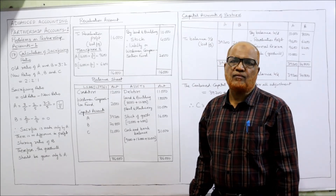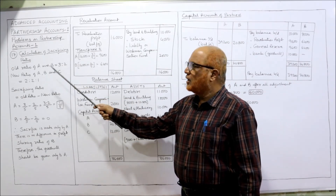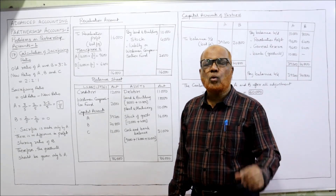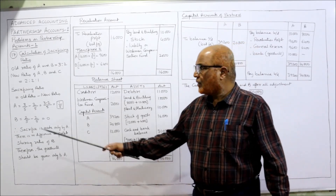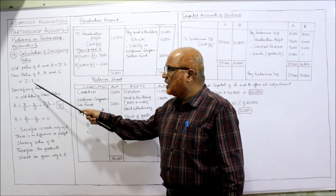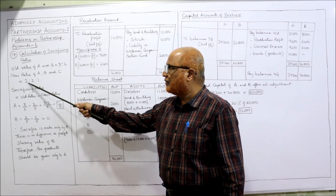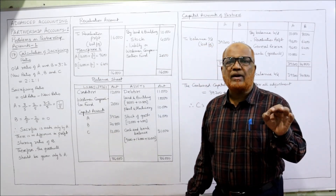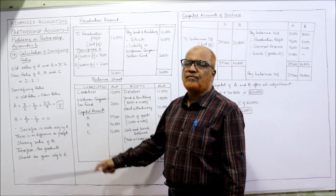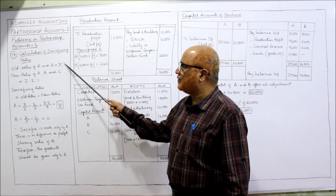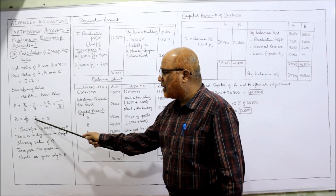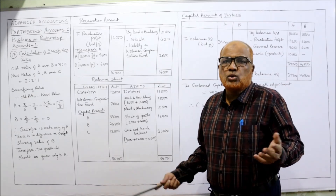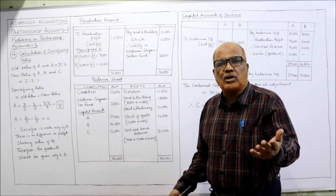Calculating the sacrificing ratio: old ratio of A and B is 3:2, new ratio of A, B and C is 2:2:1. Formula: sacrificing ratio = old ratio minus new ratio. For A: 3/5 minus 2/5 = 1/5. So A's sacrificing ratio is 1/5. For B: old ratio 2/5 minus new ratio 2/5 = 0. That means no sacrifice is made by partner B — there is no change in his profit share; earlier he was sharing 2/5 and in future also he shares 2/5.